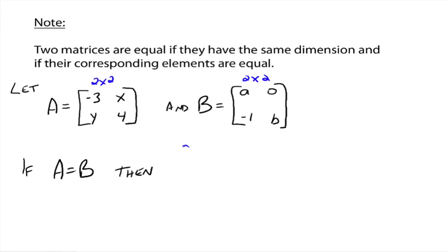Well, then a has to equal negative 3, right? Because the corresponding entries have to equal. This row 1 column 1 has to equal row 1 column over here. x has to equal 0, y has to equal negative 1, and 4 has to equal b. I'm just trying to get the idea across that the only way two matrices can be equal is if they have the same dimension and the corresponding entries are equal.